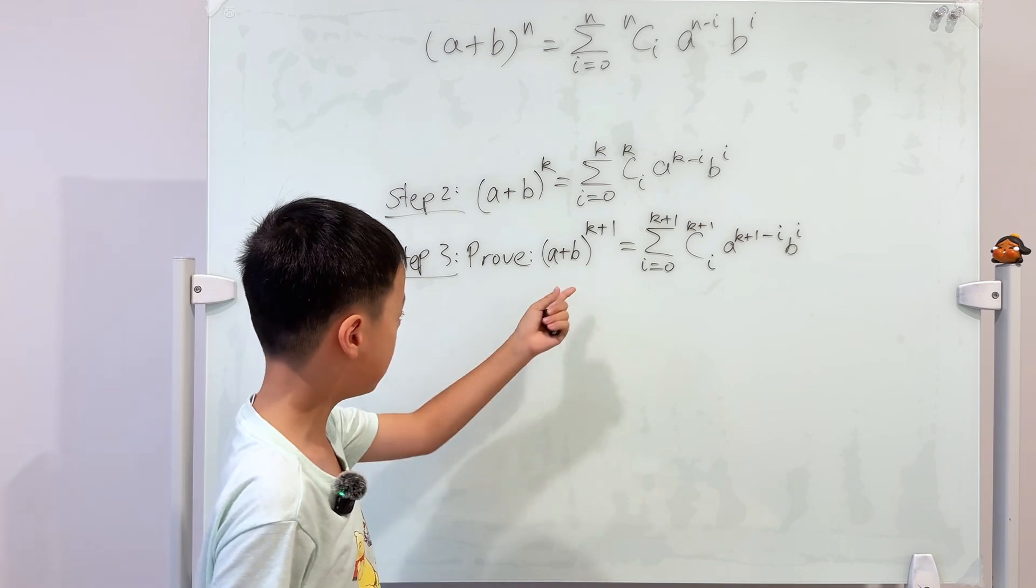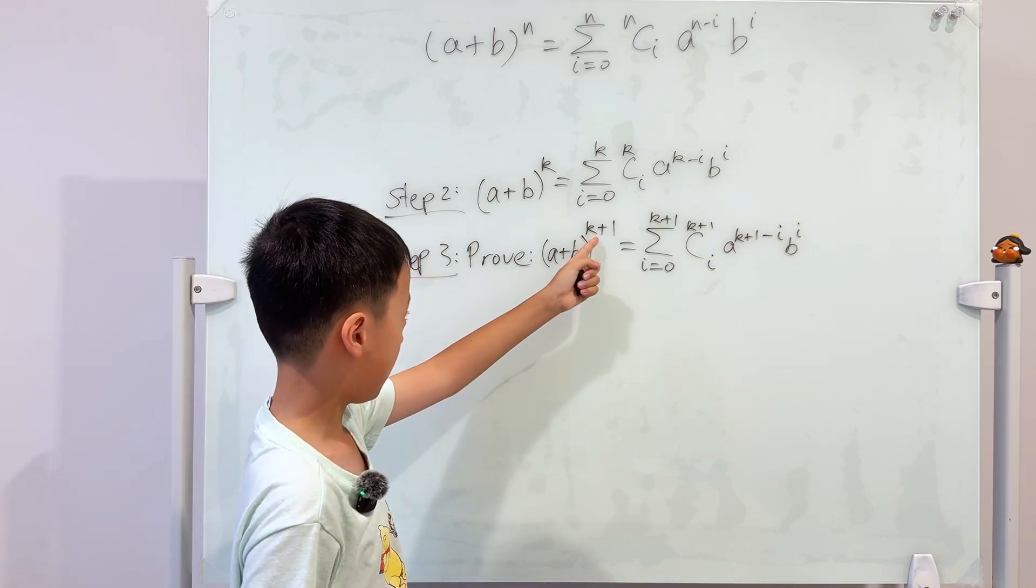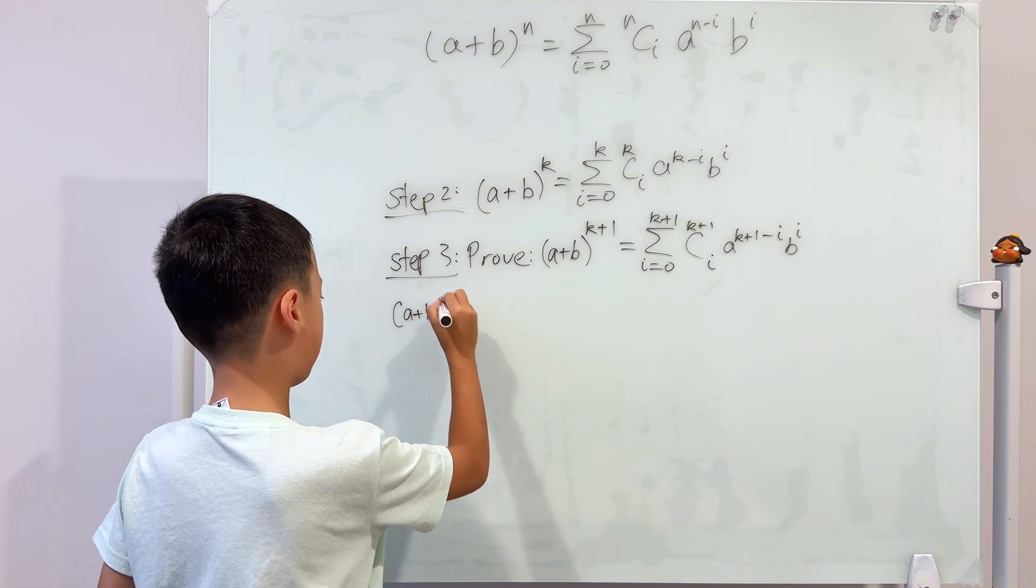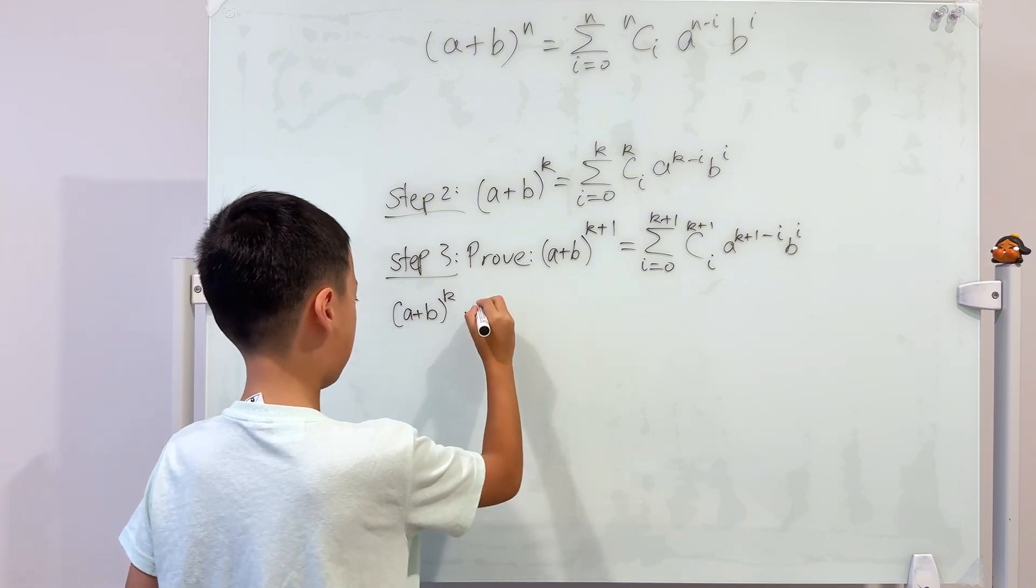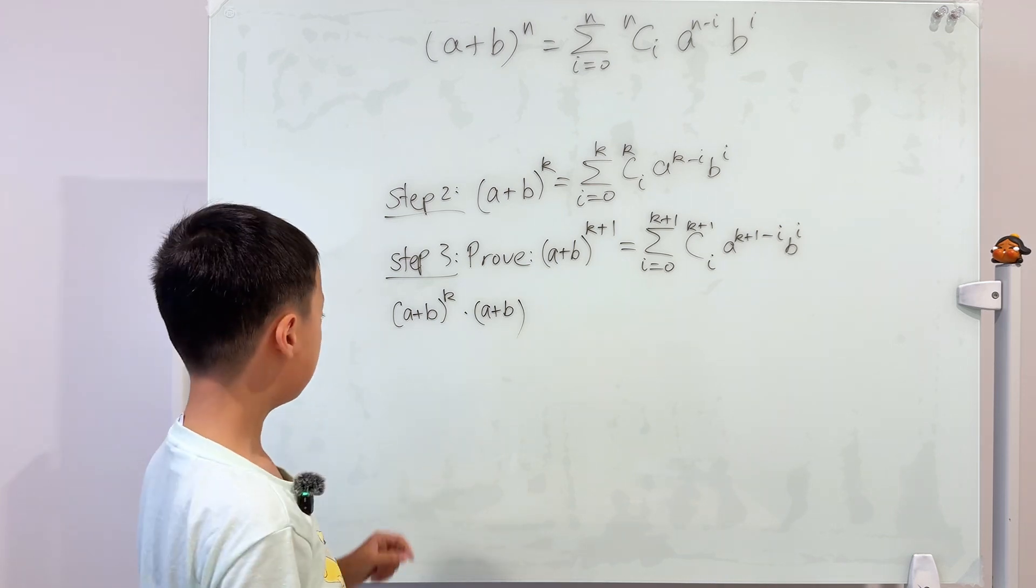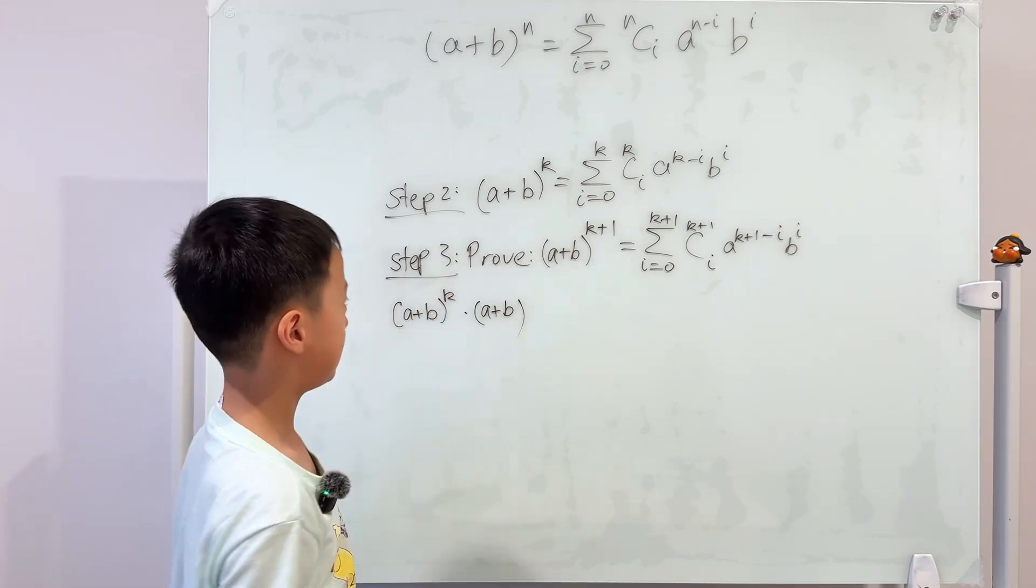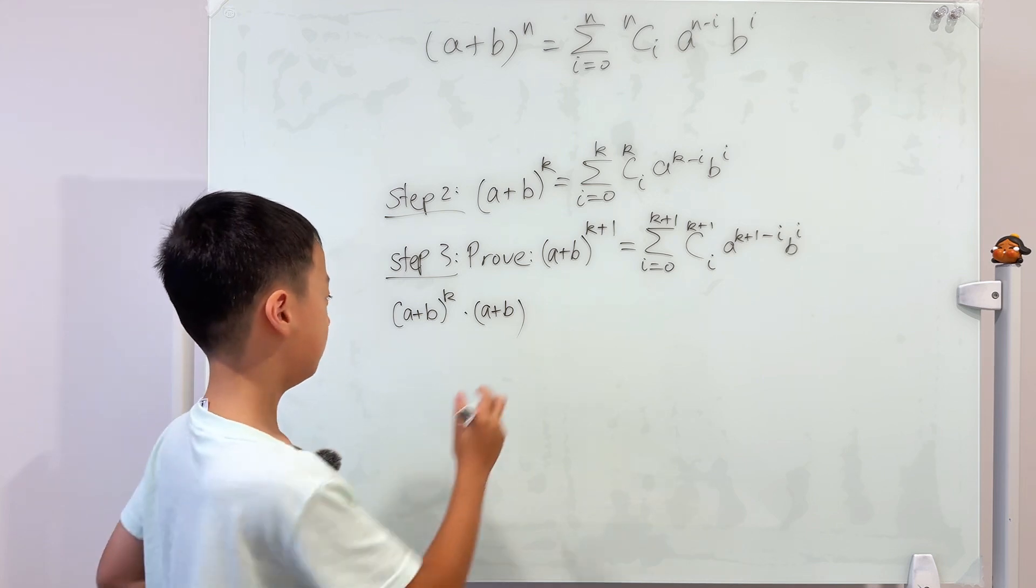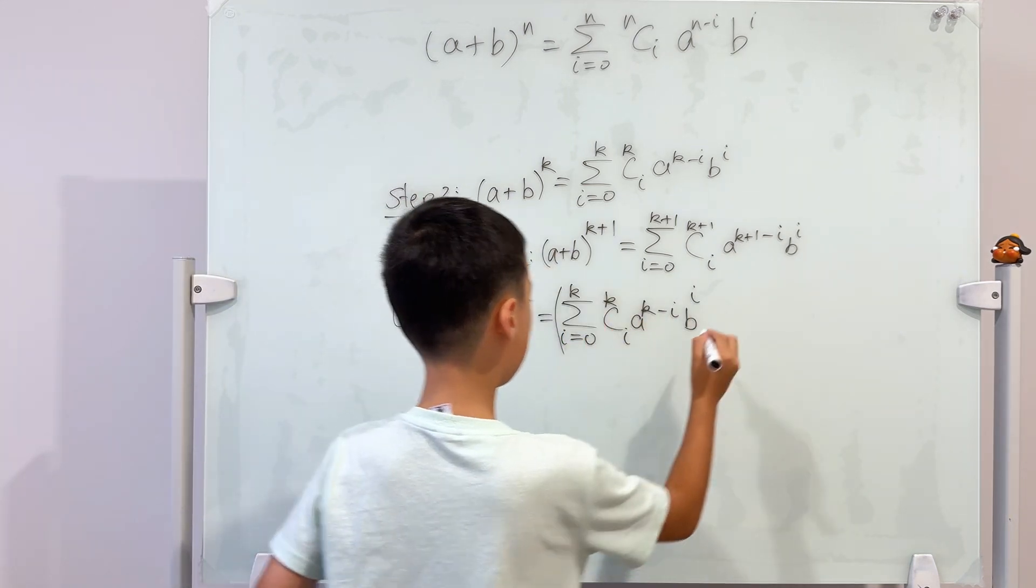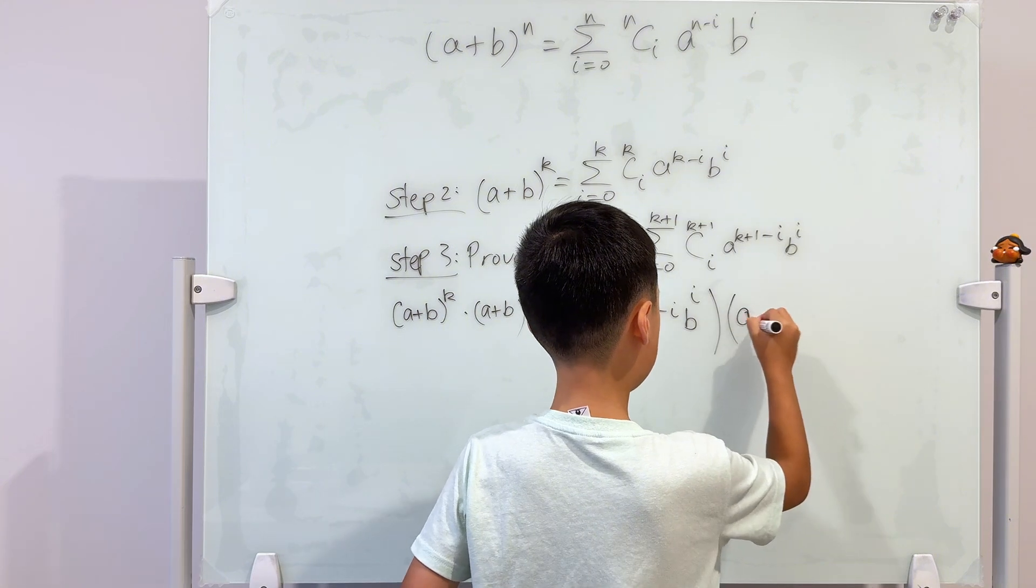And step three, to prove it's true when n is k plus one. We can change this a plus b to the power of k plus one into a plus b to the power of k multiply by a plus b. And based on step two, we can change this into this because we assumed it's true, or multiply by a plus b.